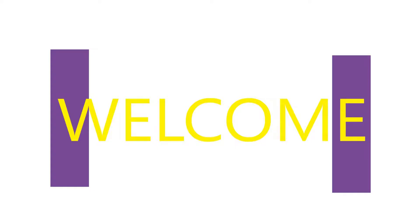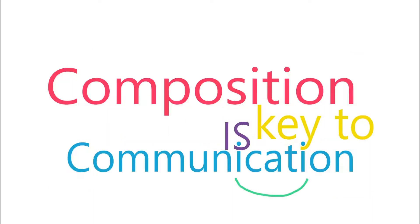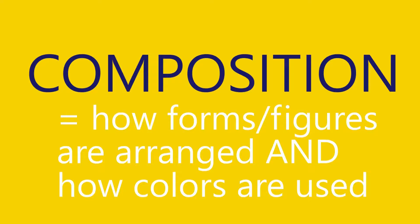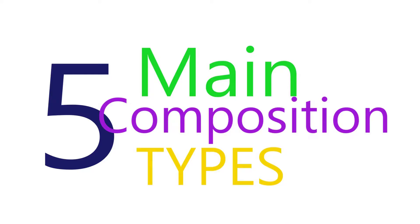Welcome to the Art Unlocked course on Scene Composition. Composition is key to communication. Composition is how forms or figures are arranged and how colors are used. In this first lesson, we'll be learning the five main composition types.